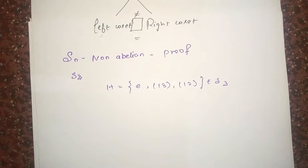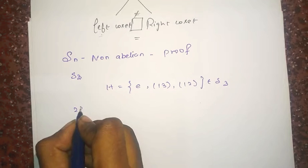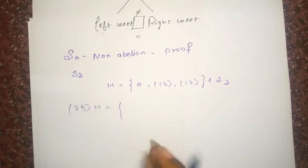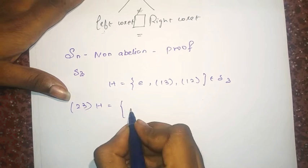Now, I am going to calculate the left coset of it (2,3) and H and I am going to do the composition mapping.